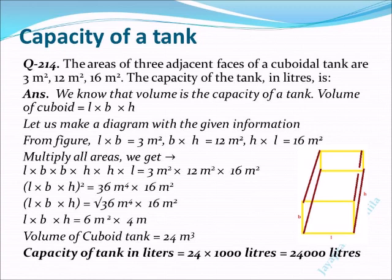On the left side, every variable is repeated two times. Therefore, L times L is L squared, B times B is B squared, and H times H is H squared.